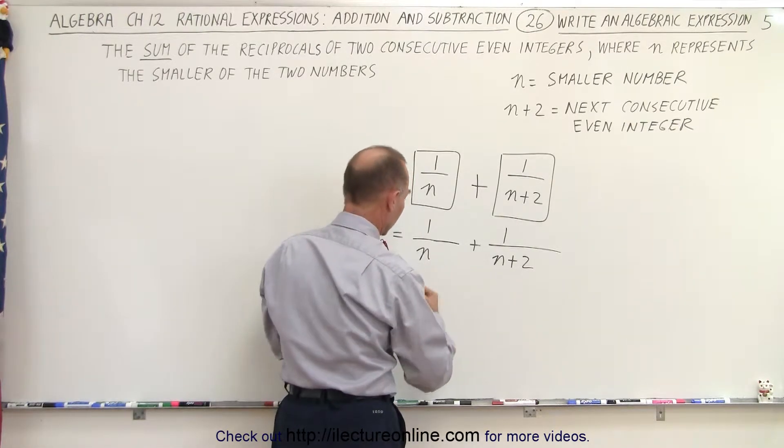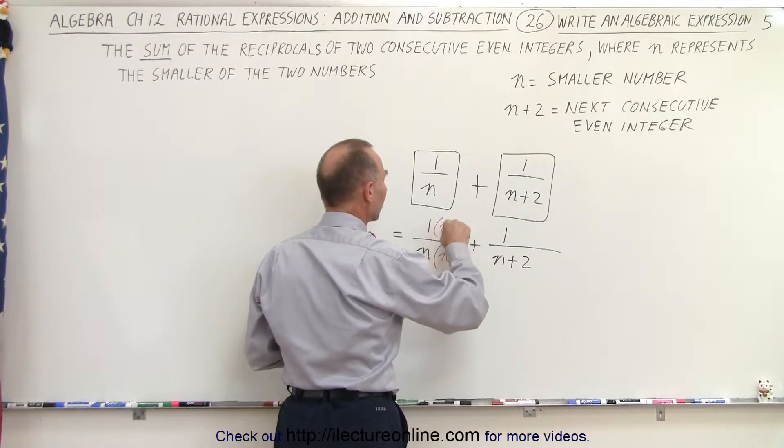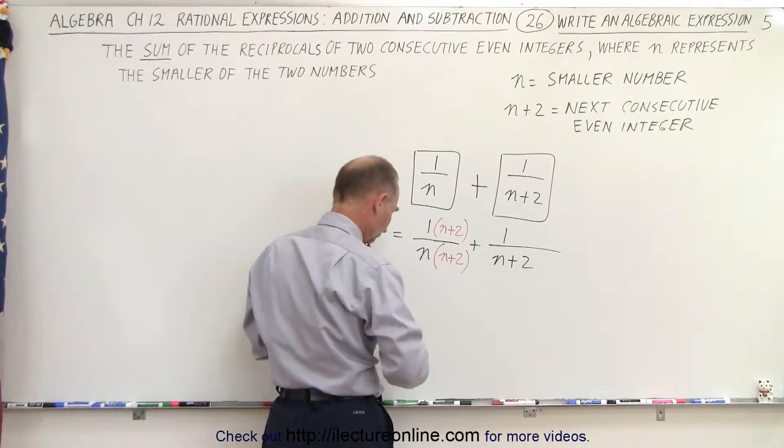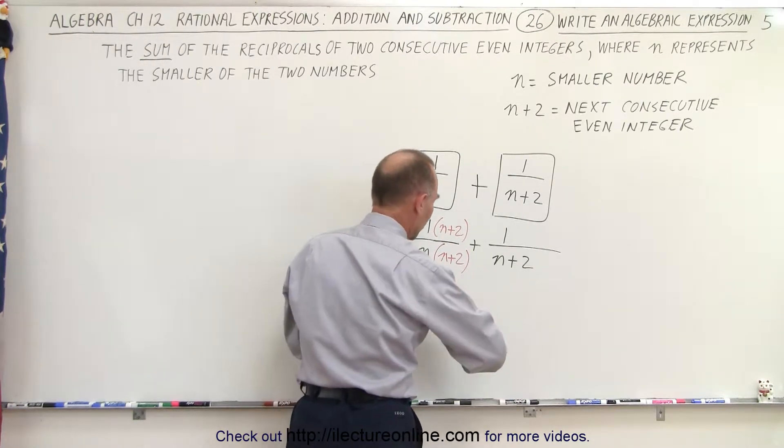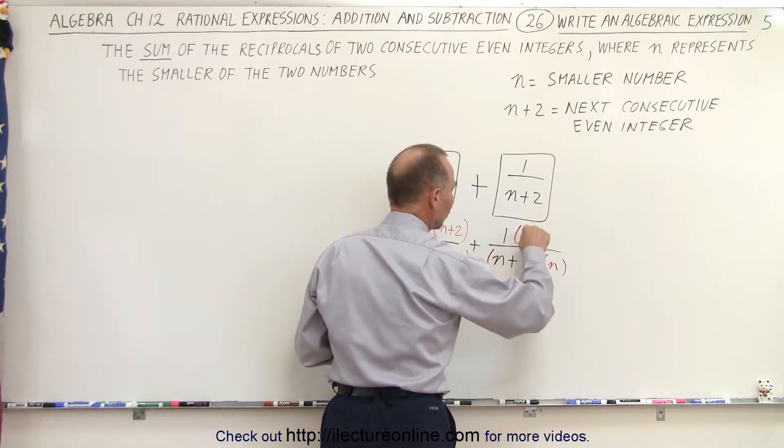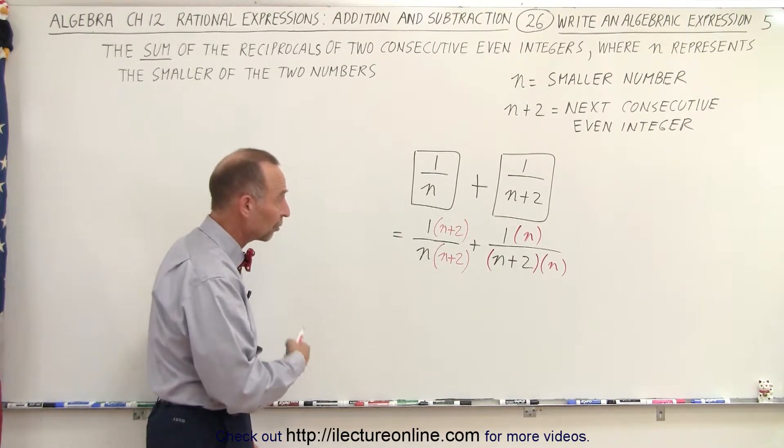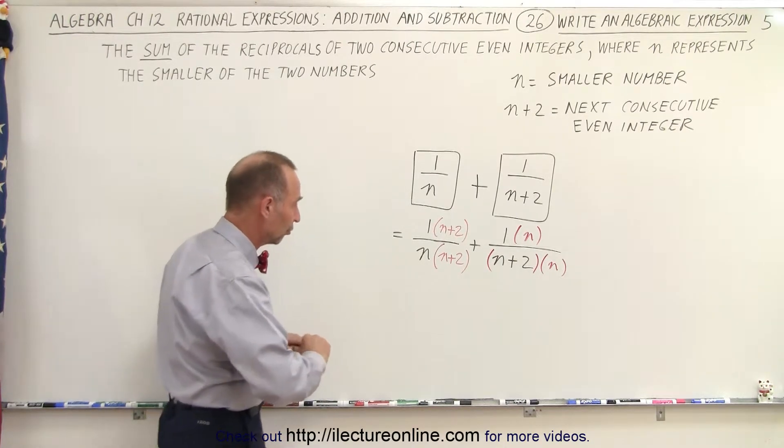The common denominator would be the product n times n plus 2. So here we're going to multiply this by n plus 2, and that means the numerator must be multiplied by n plus 2 as well. And then this here must be multiplied times n. We have to do the same to the numerator in such a way that the common denominator is the quantity n times n plus 2.